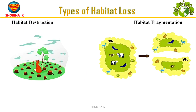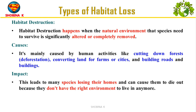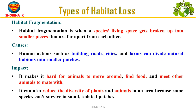There are two types of habitat loss: habitat destruction and habitat fragmentation. Habitat destruction refers to the complete removal or destruction of a habitat, typically due to human activities such as deforestation, urbanization, mining or agriculture. This directly eliminates the habitat and resources it provides for species, leading to loss of biodiversity and ecosystem services.